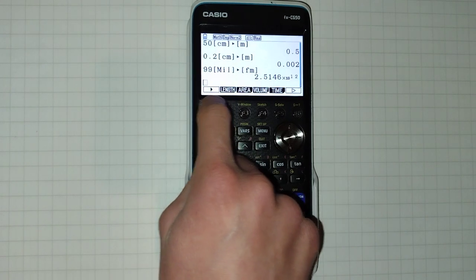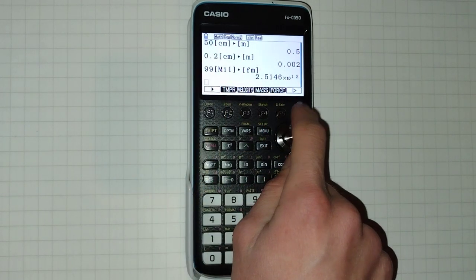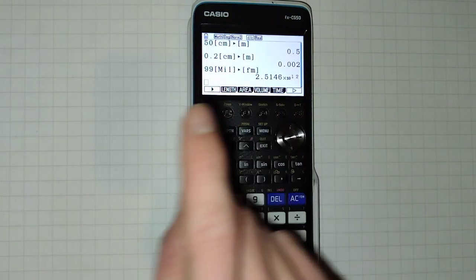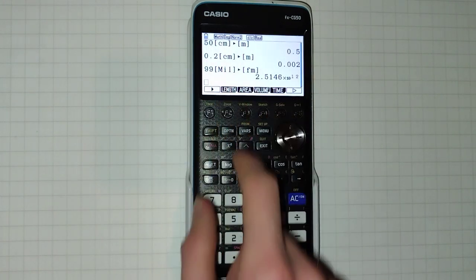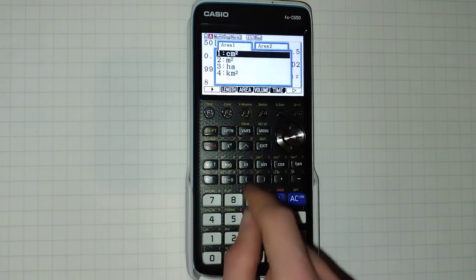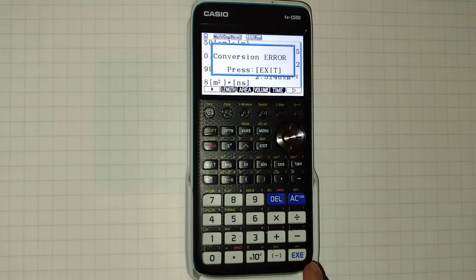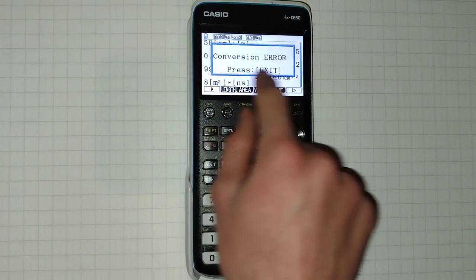This arrow the conversion arrow is available on all of these sub menus. You cannot convert between these different quantity types of course so eight let's say meter squared into milliseconds or nanoseconds will just give you a conversion error.